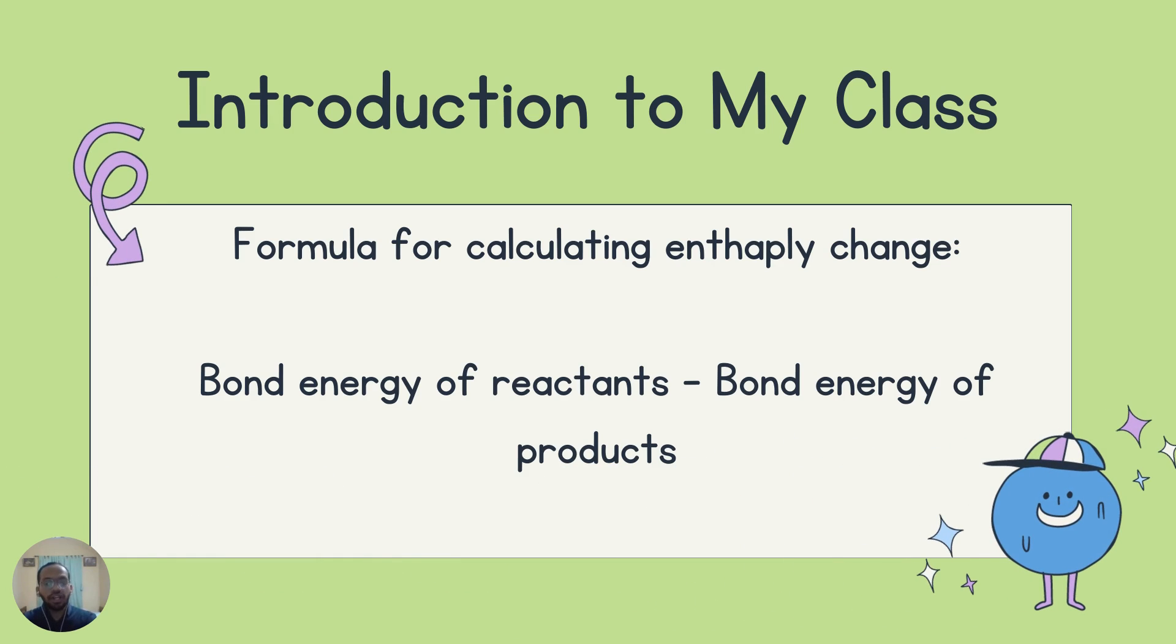The formula for calculating enthalpy change is bond energy of reactants minus bond energy of products. Or, in other words, we can say left-hand side minus right-hand side.